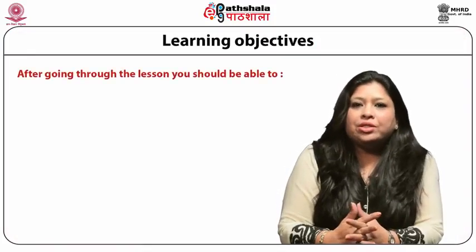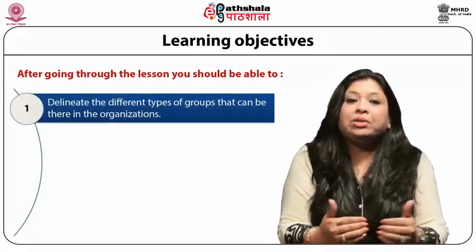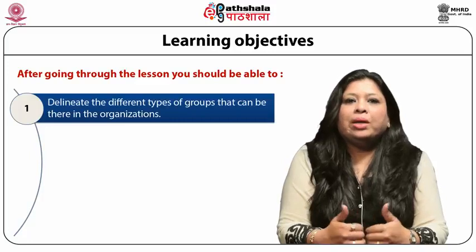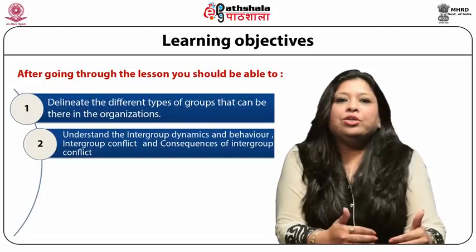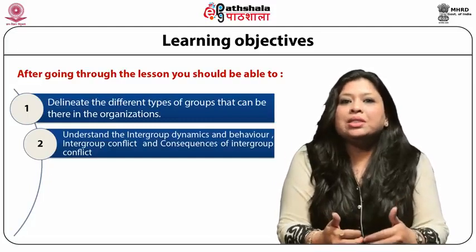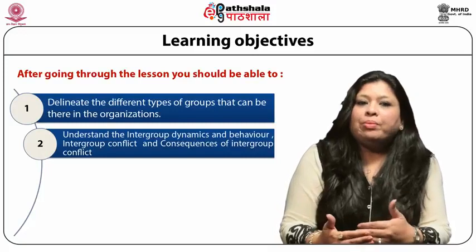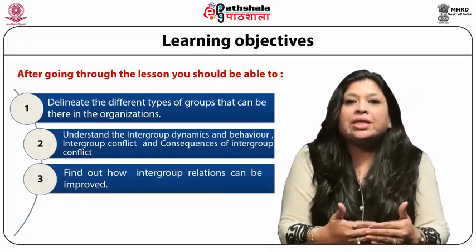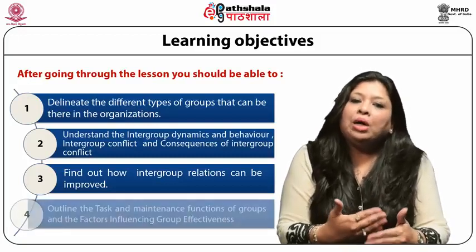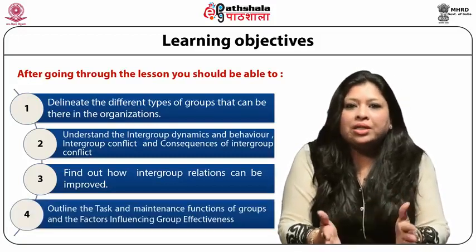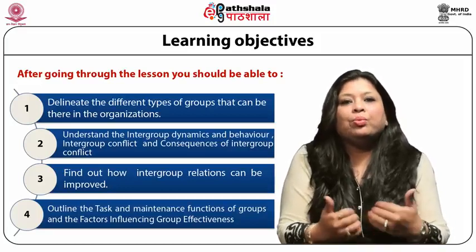After going through the lesson you should be able to delineate the different types of groups that can be there in the organizations. You should be able to understand the intergroup dynamics and behavior, intergroup conflict and consequences of intergroup conflict. After this you will be able to find out how intergroup relations can be improved in the organizations, and outline the task and maintenance functions of groups and the factors influencing group effectiveness.